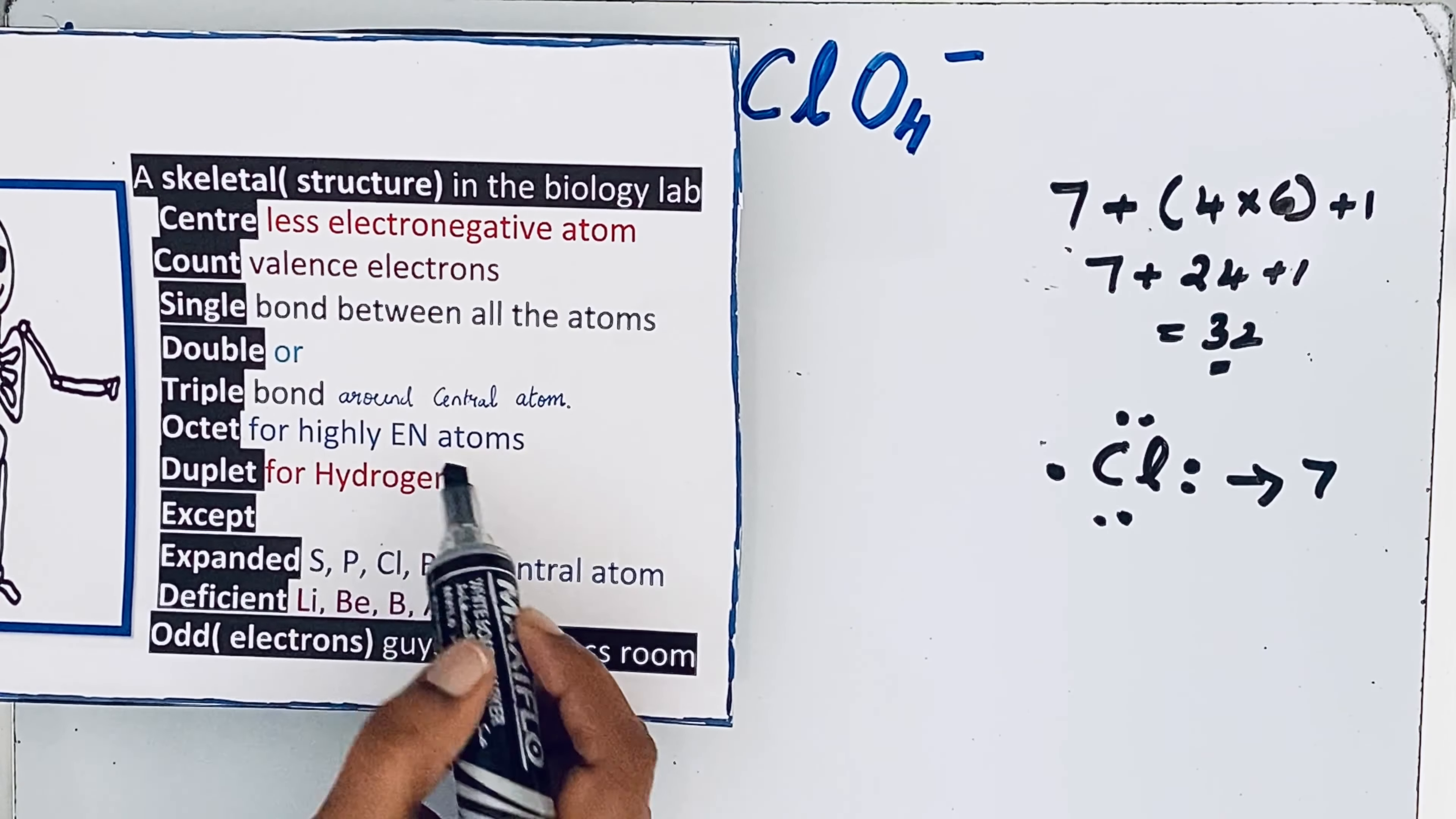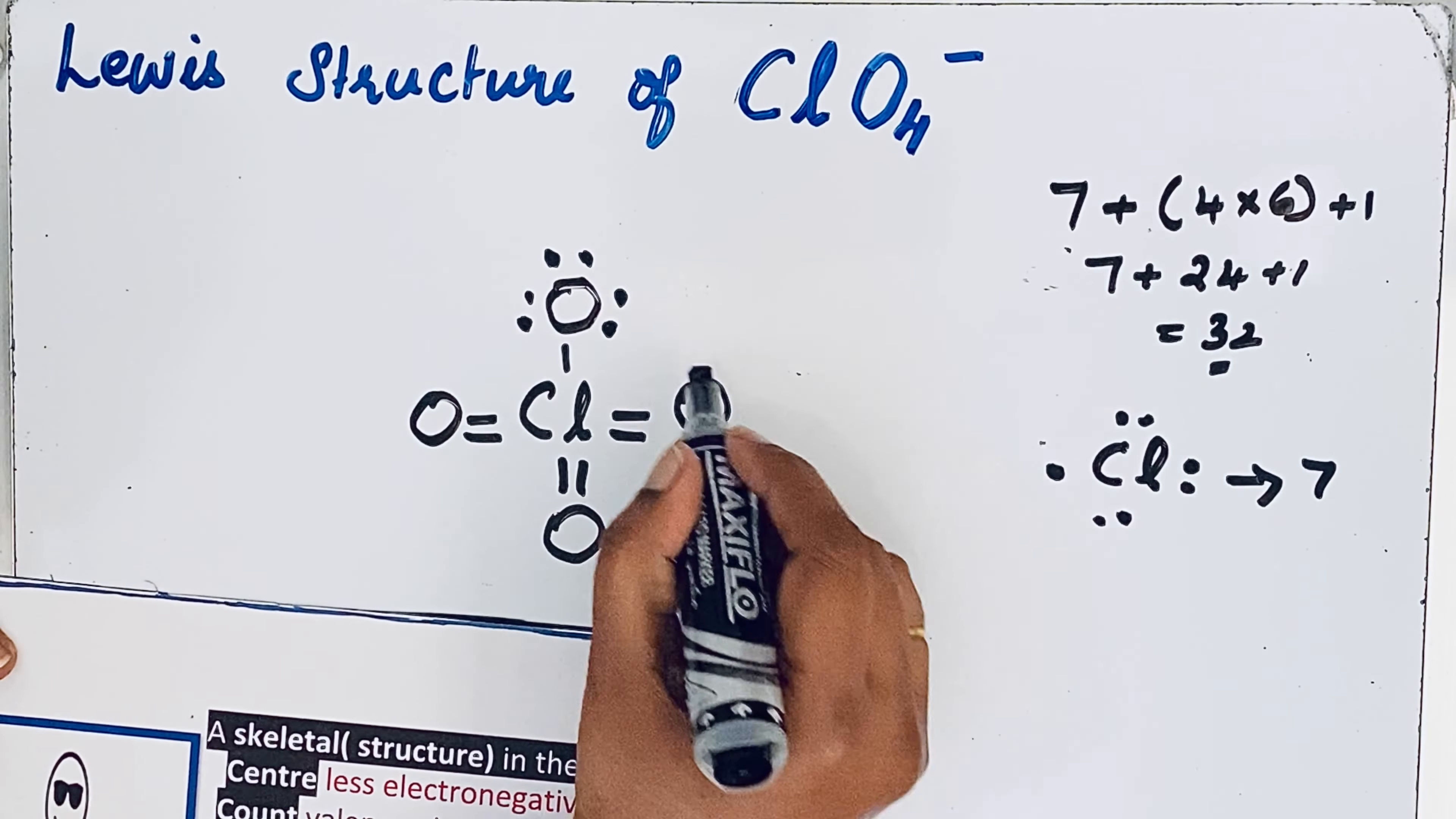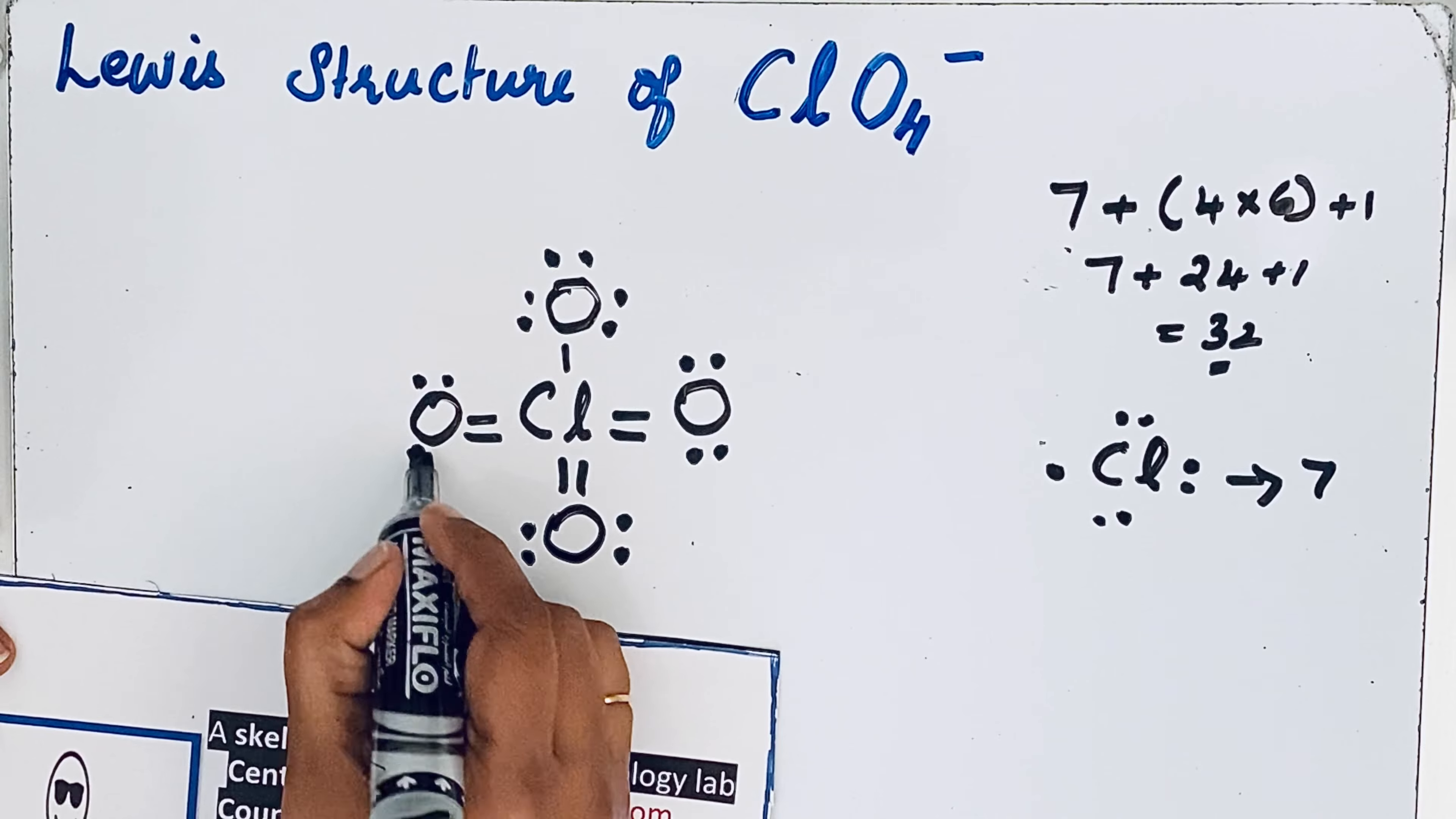Next one, octet for highly electronegative atom. So here oxygen is highly electronegative. Already single bonds, so two electrons, four, six, eight. Let us come to this oxygen atom: two, four, six, eight. Then here also two, four, six, eight. Then come to this oxygen: two, four, six, eight.